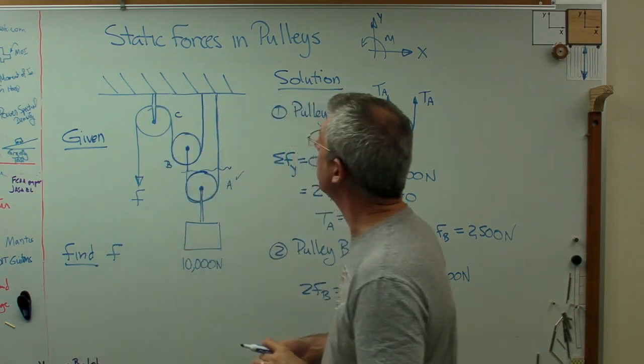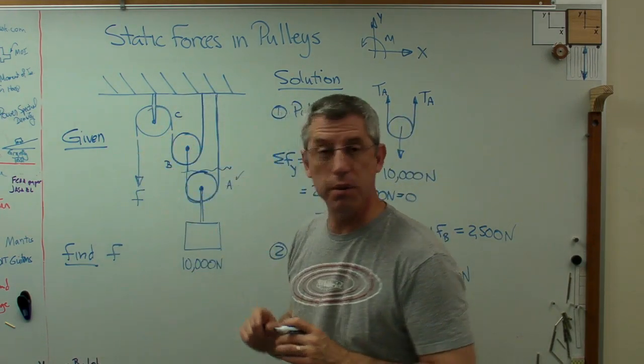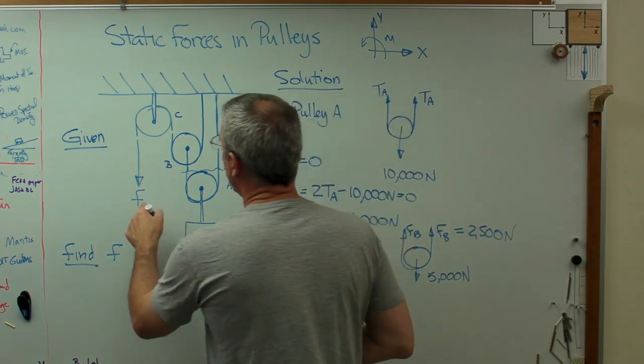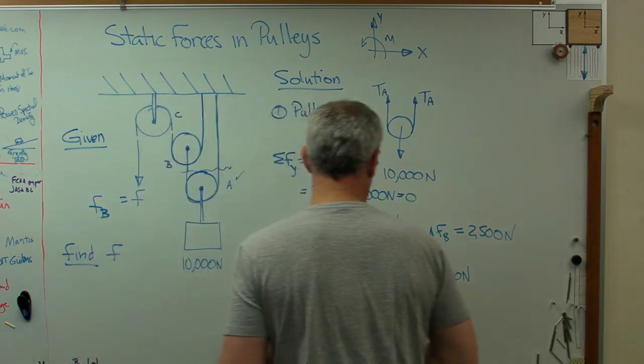Now let's look at pulley C. The tension in the cable there and the tension in the cable there are exactly the same. So F must equal FB.